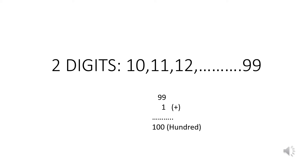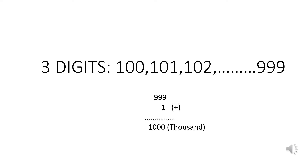100 is the smallest three-digit number. From 100 to 999, these numbers are called three-digit numbers. 100 is the smallest three-digit number and 999 is the greatest three-digit number. When we add 1 to the greatest three-digit number 999, we get 1000. 1000 is a four-digit number.